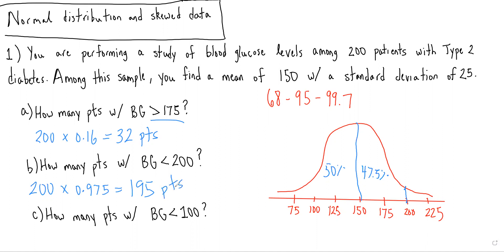Then lastly, we're asked, how many patients will have a blood glucose less than 100? So we're asked, how many patients will have a blood glucose to the left of 100?